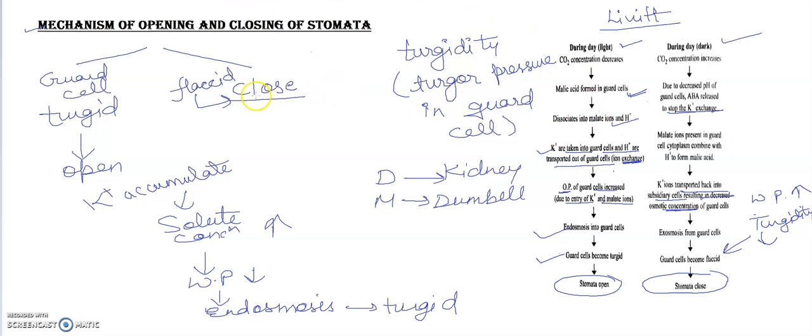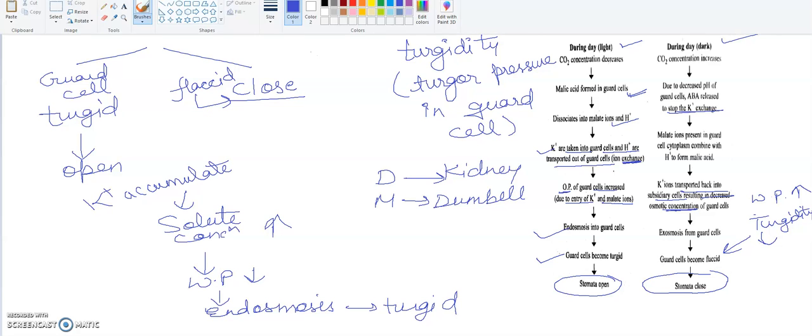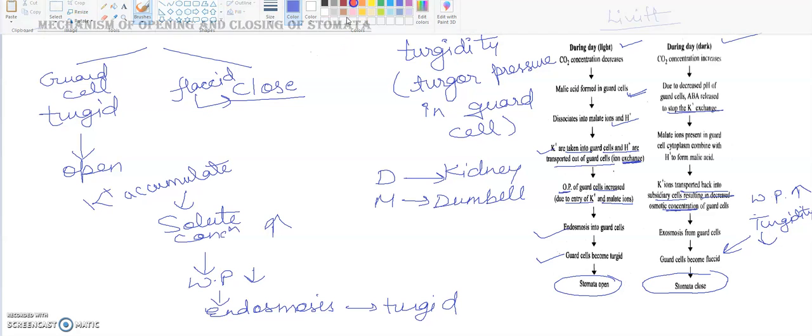There are two theories we have studied here. One is potassium ion concentration theory and another is sugar concentration theory. Sugar concentration theory, you know that in photosynthesis we make glucose. What happens in daytime? Glucose concentration will increase. When glucose concentration will increase, water molecules will become endosmosis, swelling and turgidity will be maintained and there will be stomata opening. In this way you can understand about the concept of opening and closing of stomata.